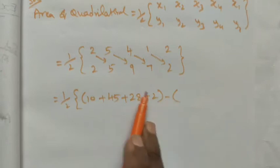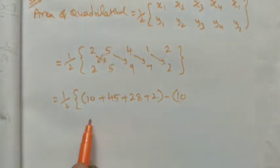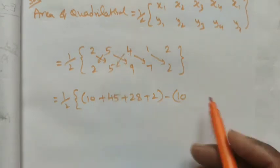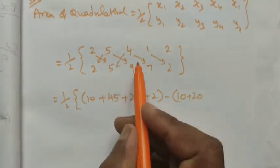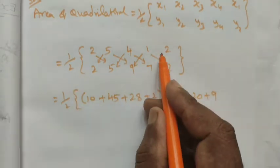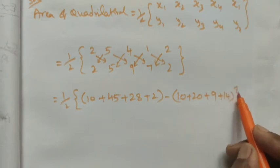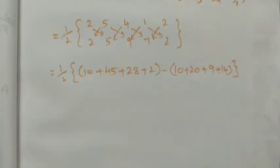Plus 4 times 7 is 28, plus 1 times 2 is 2, minus the second term: 5 times 2 is 10, 4 times 5 is 20, 1 times 9 is 9. There is no negative value so we get positive only, 2 times 7 is 14.